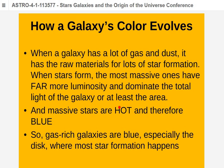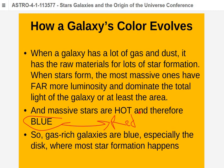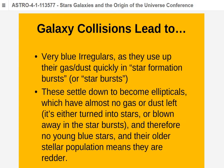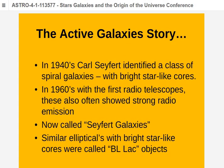Galaxy color evolution: galaxies start out blue because they're dominated by massive blue stars that live short lives. When those die, the remaining stars eventually become red giants, which are as bright as blue giant stars, so old stellar populations appear red. Young populations are blue; old populations are red. Galaxy collisions lead to irregulars, which settle down and become ellipticals.